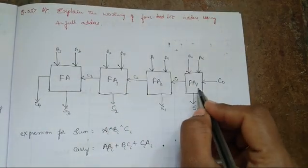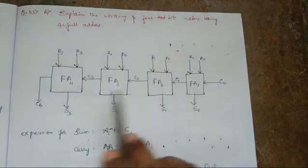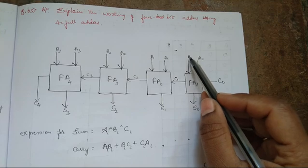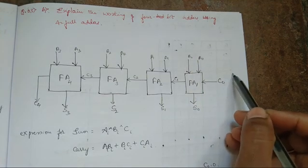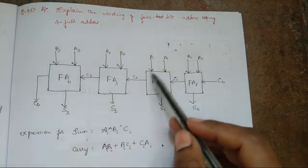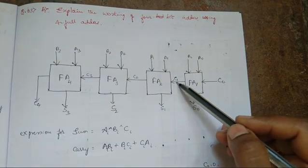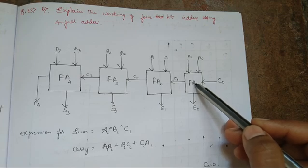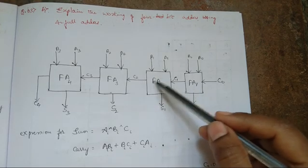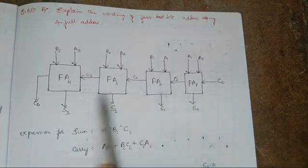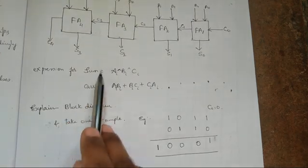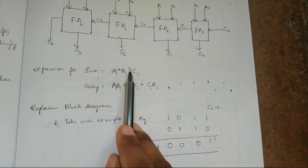The inputs for the first full adder FA1 are A0, B0, and C0, where C0 is the carry-in from the last stage. The outputs are S0 and C1. For the second full adder FA2, the inputs are A1, B1, and C1, where C1 is the carry-out of FA1 used as carry-in for FA2, and the output is S1 and C2. Similarly explain each full adder.